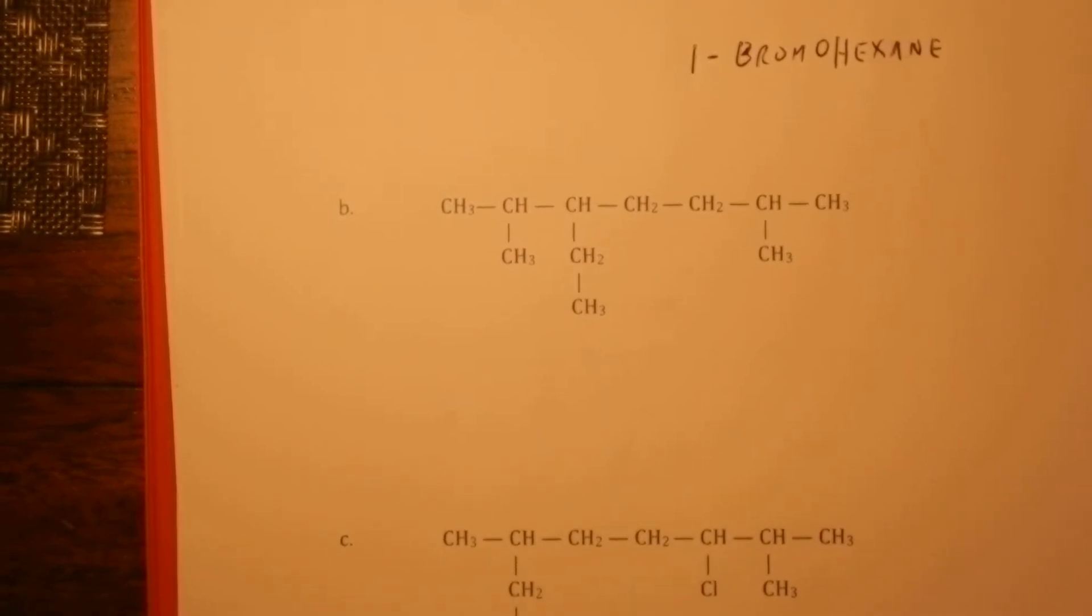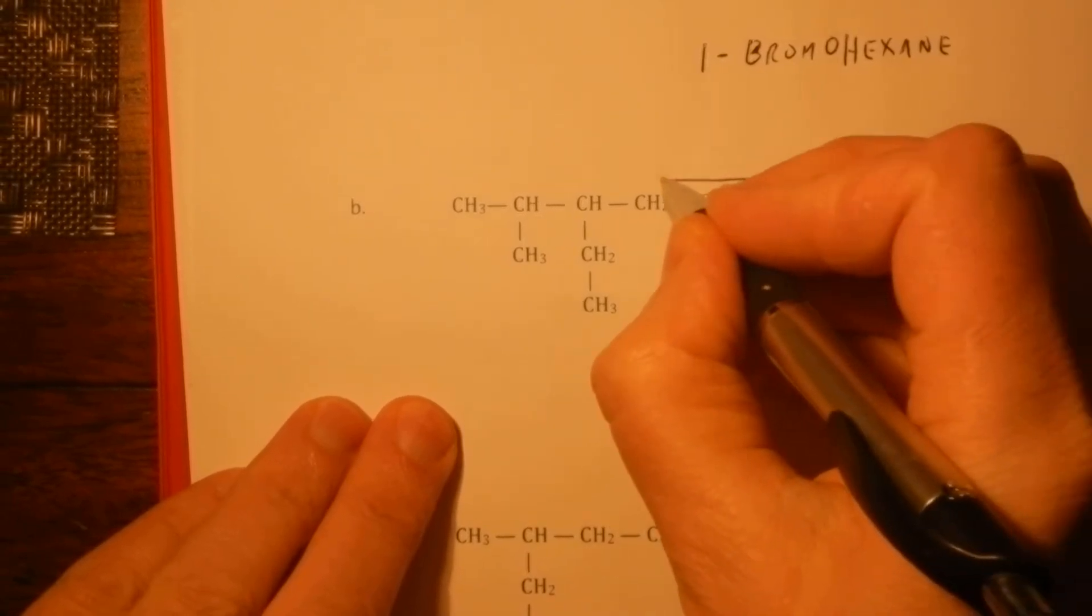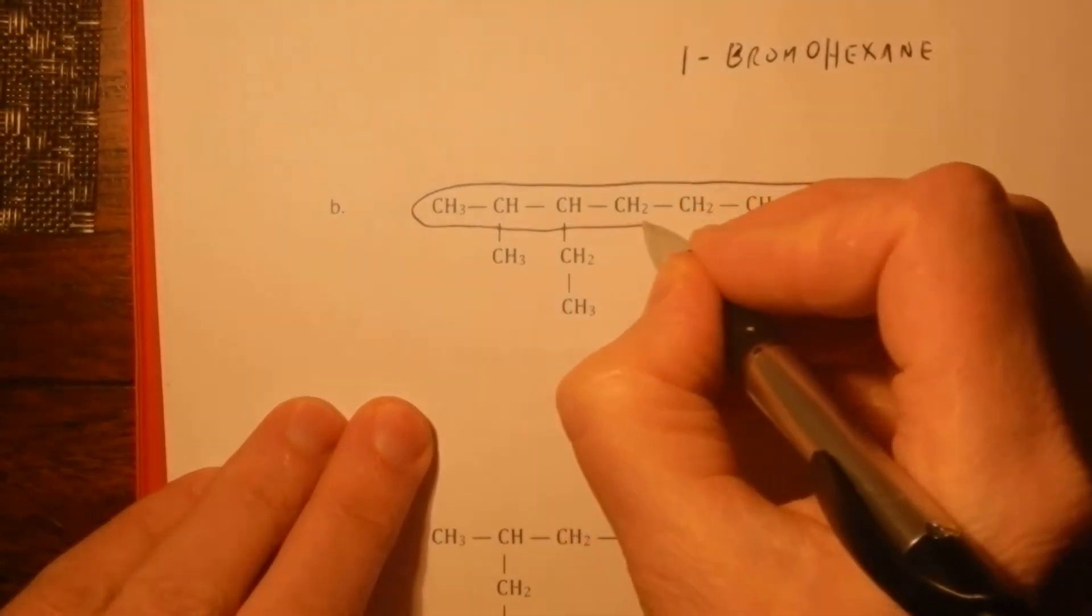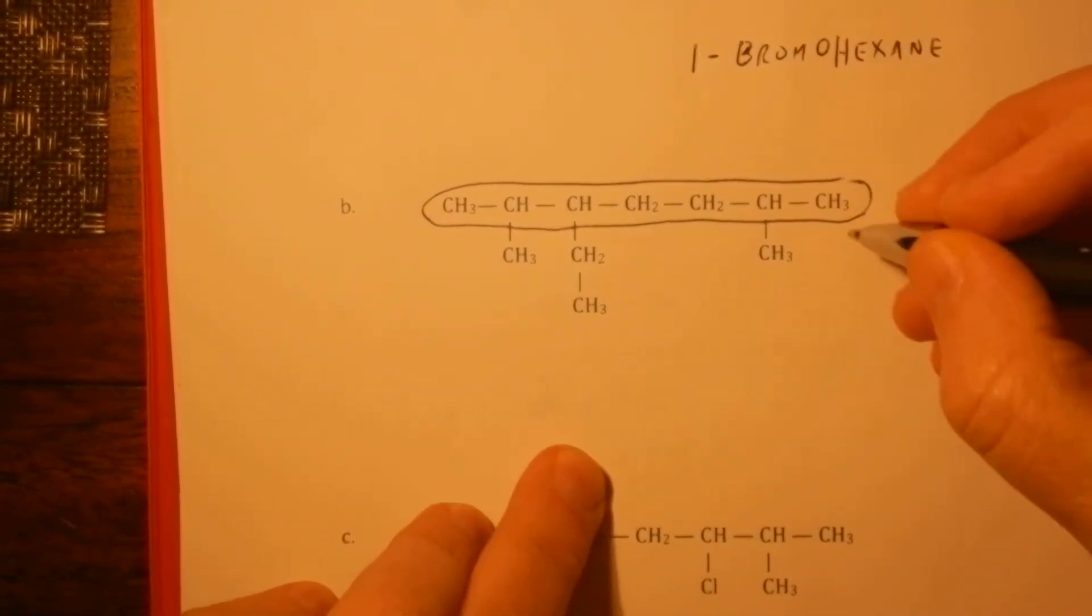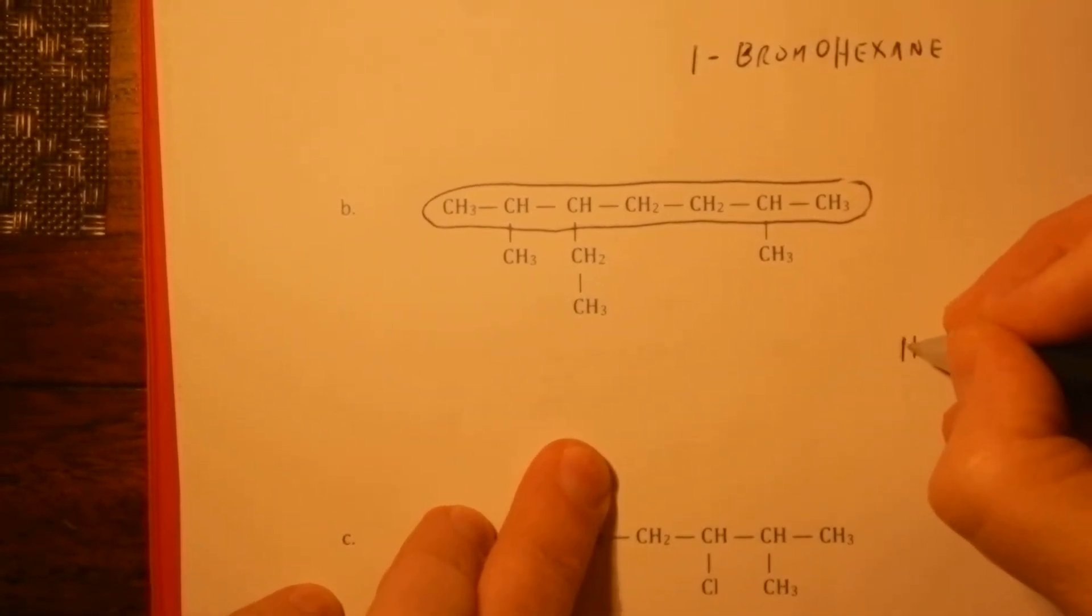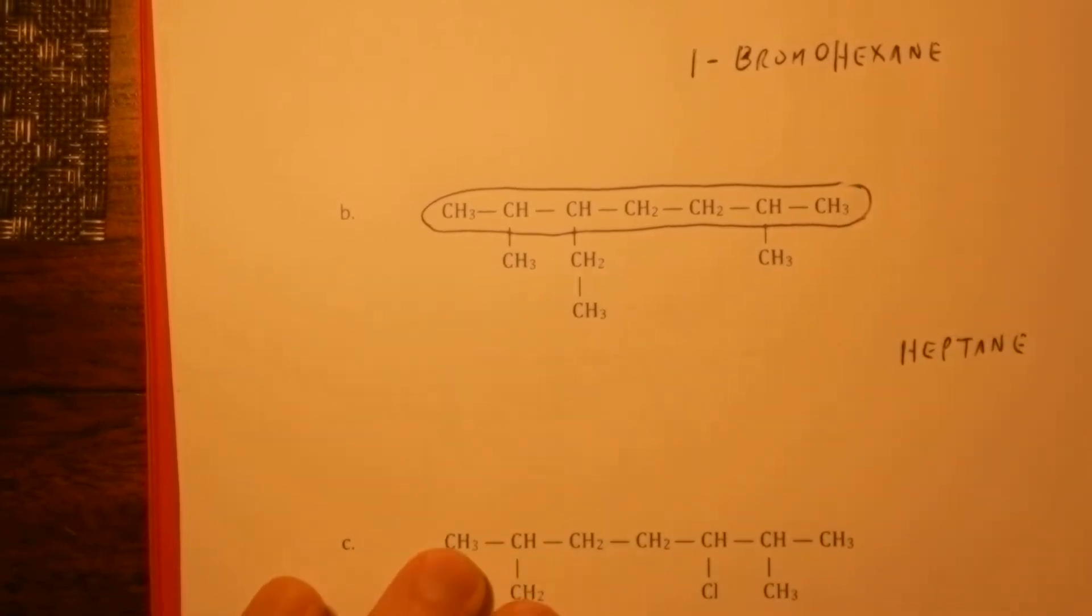Next example. Again, we have to find the longest sausage, and it happens to be like so. This time it has seven carbons, so that makes it a heptane. Now,